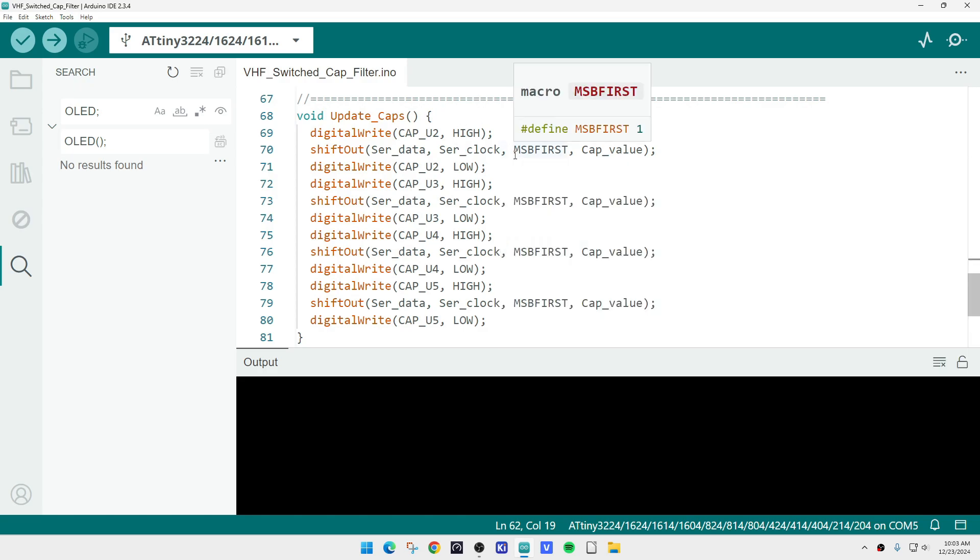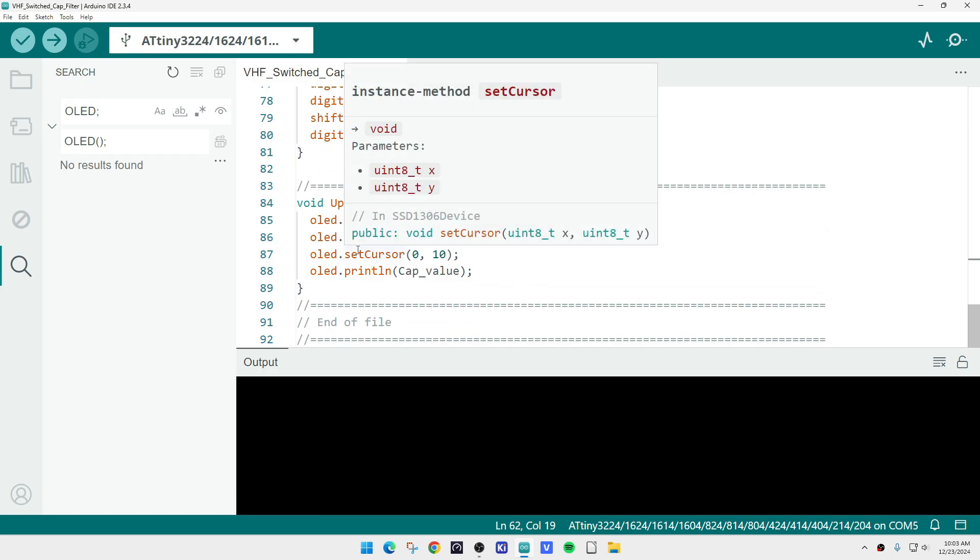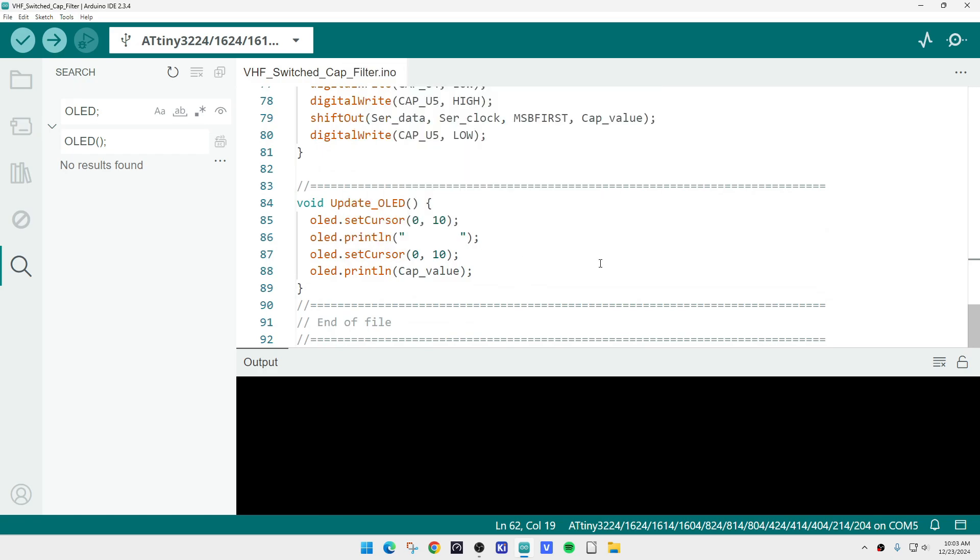The error that I had the first time was I had LSB first, but MSB first was the correct way to do it. And then update display is basically, there's one line that's going to be dedicated to displaying the cap value. I'm going to blank that line and then write the new value.